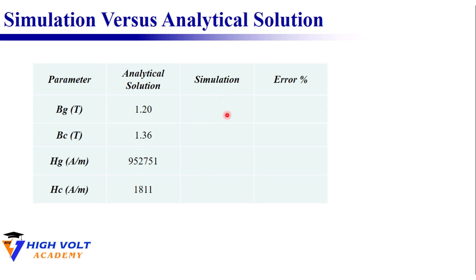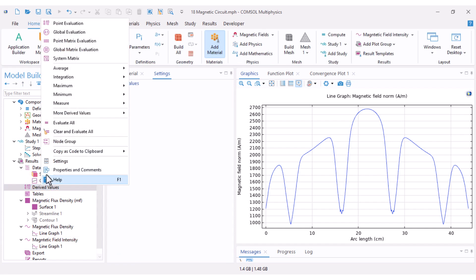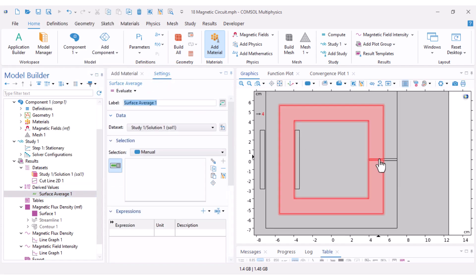I've created a table. This column is values that I have found from analytical solution and here is the simulation. First I'll measure the average of the magnetic flux density in the air gap from the simulation. For that, right click Derived Values, there's an option Surface Average.